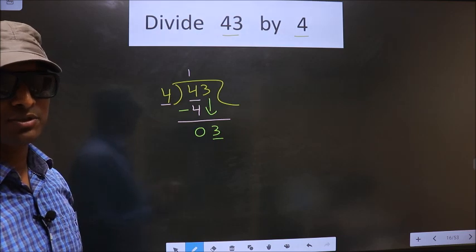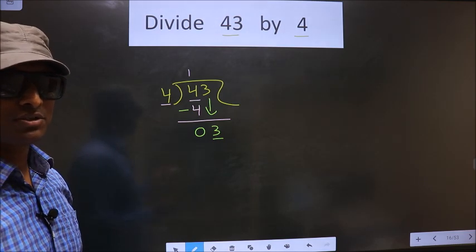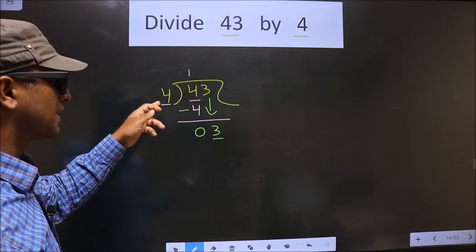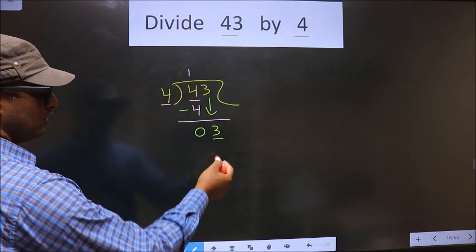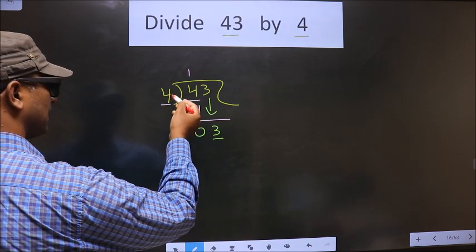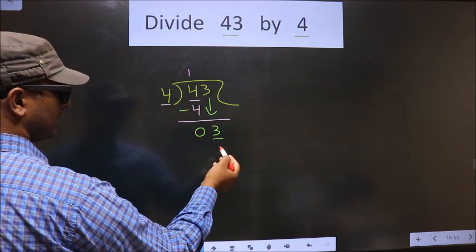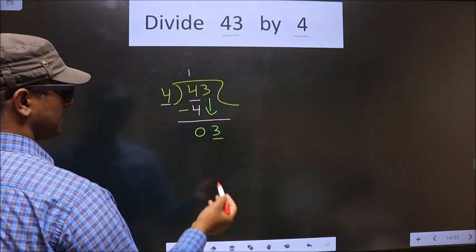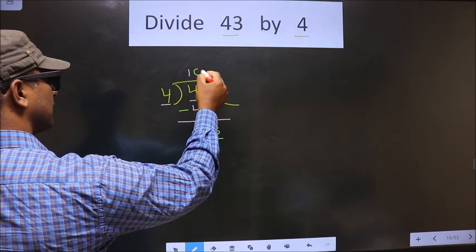Which you are not supposed to do. Instead what you should think of is: To this number what shall we multiply to get a number here? If we multiply by 1 we get 4 here. 4 is larger than 3. So what we do is we multiply by 0.